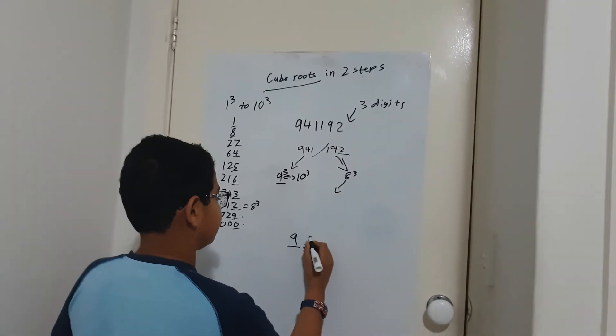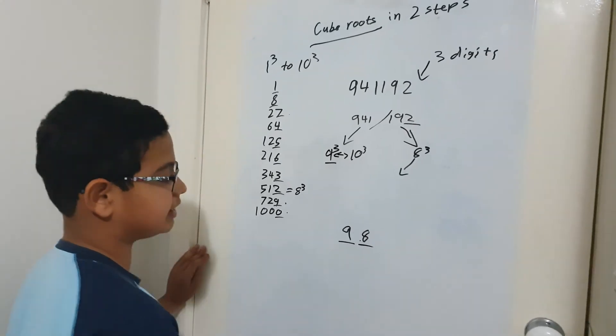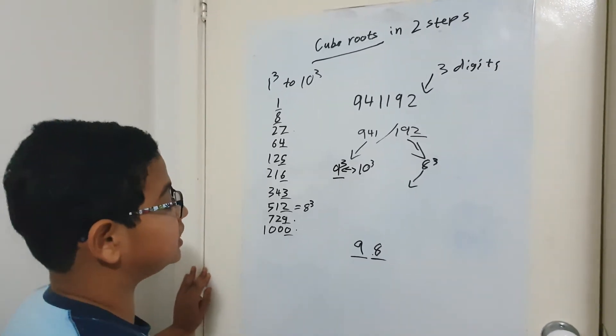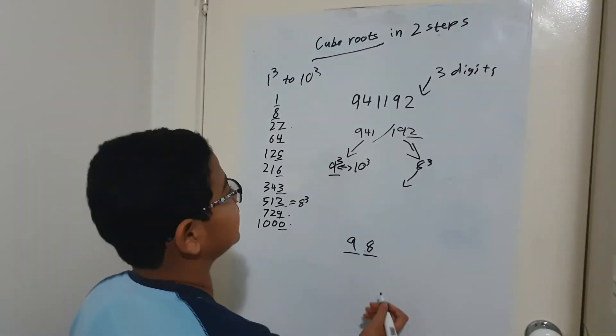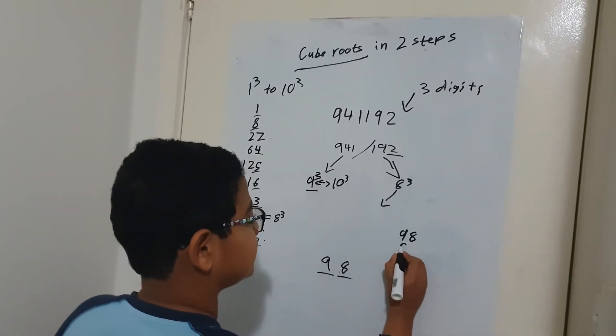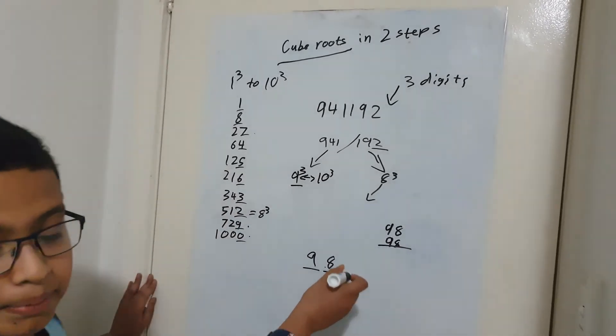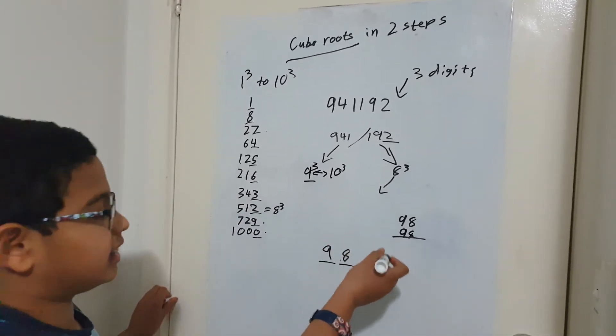And then from here you can just write down here, and our answer equals 98. And if you want to check that 98 is the correct answer, then you can just multiply 98 by 98, and then one more time. I'll just get back after I do that calculation.